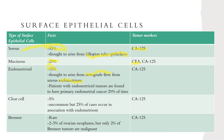Clear cell is very uncommon, making up 5 percent of epithelial cell tumors. However, it can be related to endometriosis in 25 percent of its cases. Brenner tumors are very rare, and only 2 percent of all Brenner tumors are actually malignant.